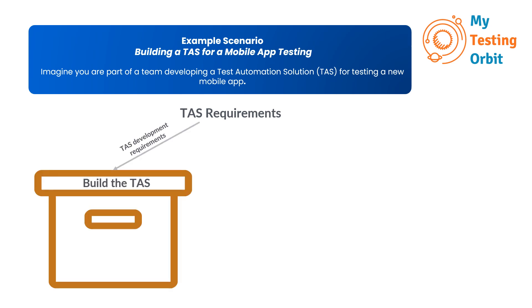The first one is TAS development requirements — the 'build the TAS' box. Inside you will find requirements that tell you how to create the TAS itself. These requirements are about designing and building the TAS as a software-based tool. They include things like what features it should have, such as how it designs tests, how it specifies those tests, and how it analyzes test results. Essentially, this box contains instructions on how to make your testing tool.